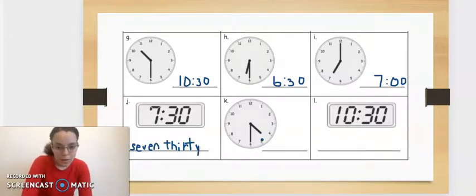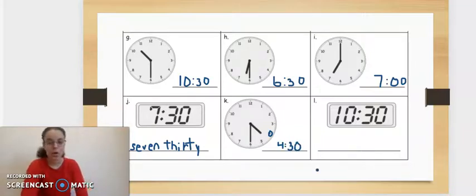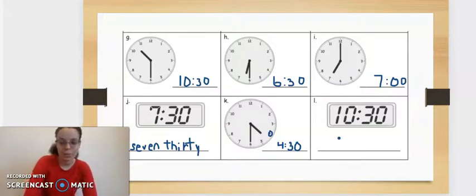All right. Between the 4 and the 5, it's still 4, and it's half, and it's 6, and it's half past 4, 4:30. Oh, you guys are getting really good with time.